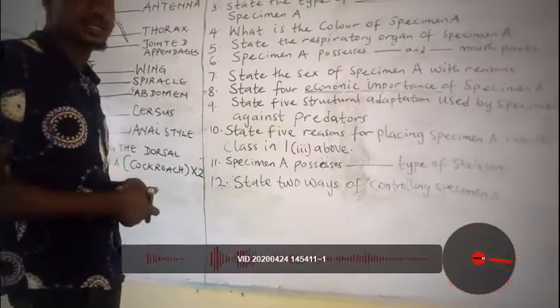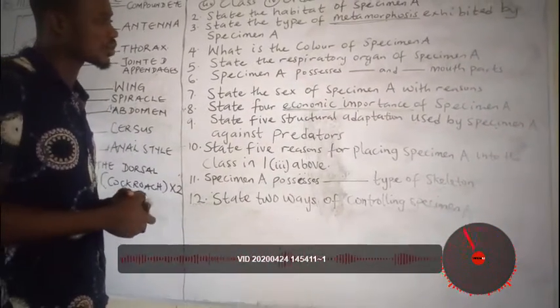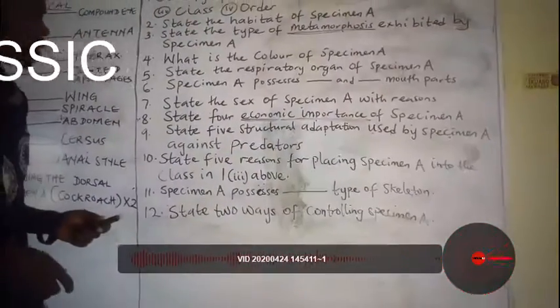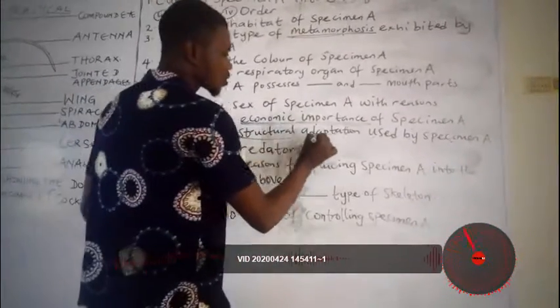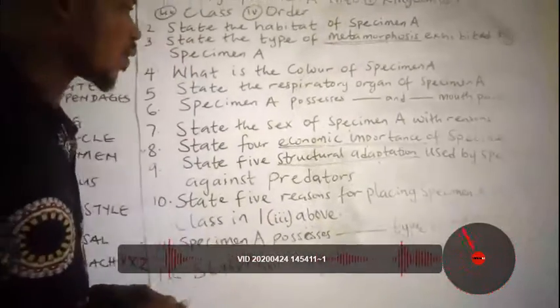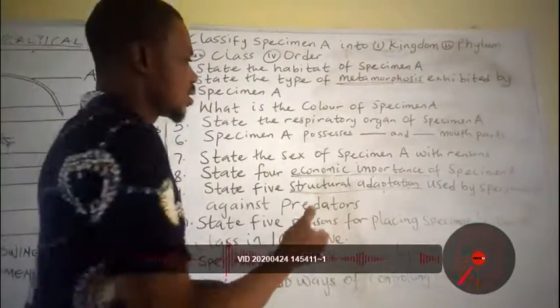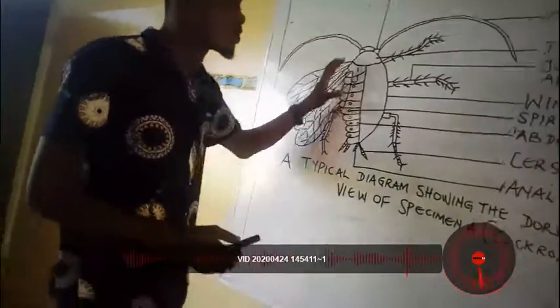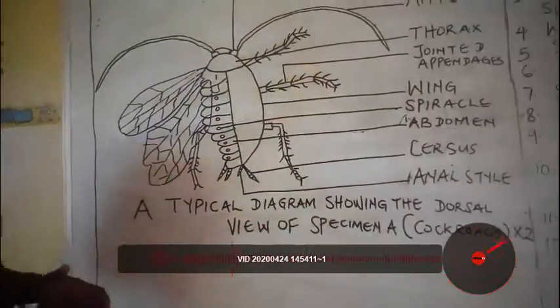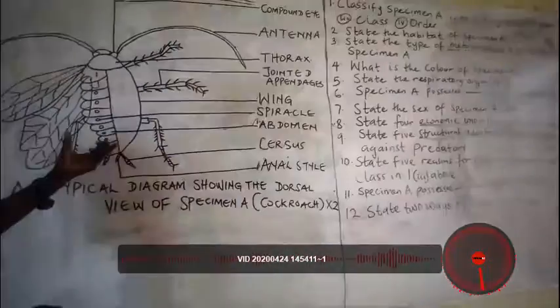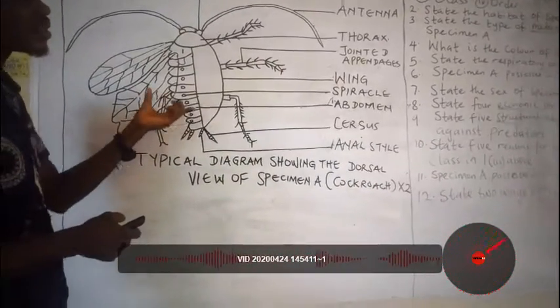The next question asks to state five structural adaptations used by specimen A against predators. When asked to state the structural adaptations of a specimen, you are to state those features the specimen possesses that allow it to survive in its environment or against predators, as stated in the question.